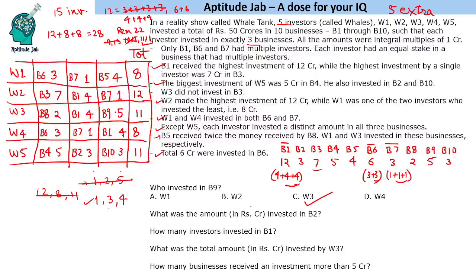Answering the questions: Who invested in b9? — Whale 3 (w3). What was the amount invested in b2? — 3 crores total. How many investors invested in b1? — 3 investors. What was the total amount invested by w3? — 11 crores. How many businesses received more than 5 crores? — Three businesses. That is the solution to this set.